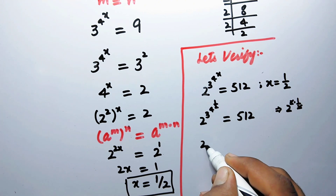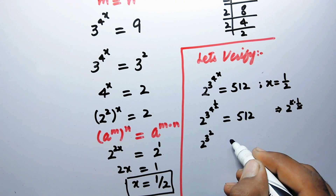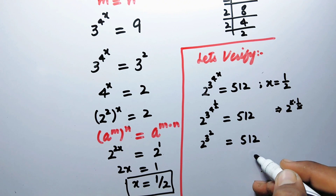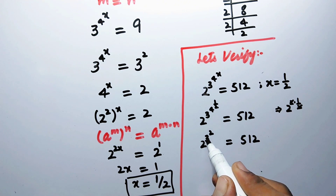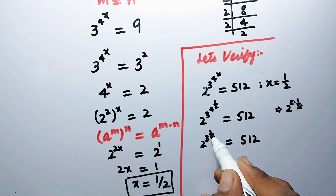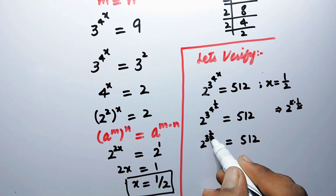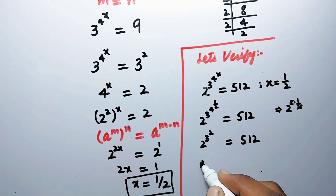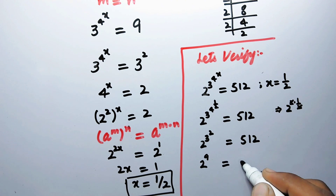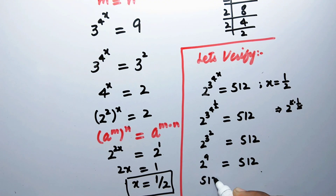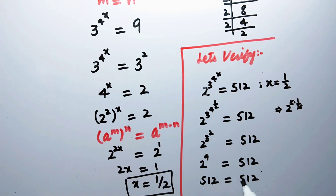So we have 2 to the power 3 to the power 2. Here, 2 is the power of 3, so 3 to the power 2 equals 9. Therefore we write 2 to the power 9, which equals 512. Since left hand side equals right hand side, it verifies that x equal to 1 over 2 is the correct answer.